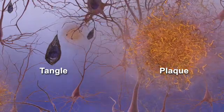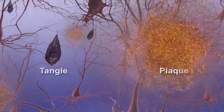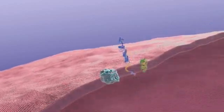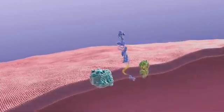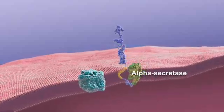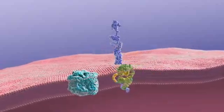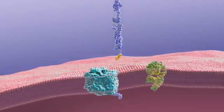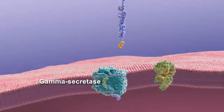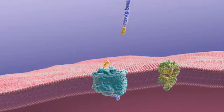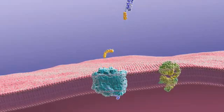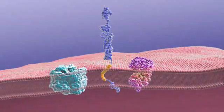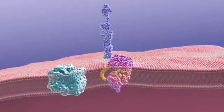Plaques form when specific proteins in the neuron's cell membrane are processed differently. Normally, an enzyme called alpha secretase snips amyloid precursor protein, or APP, releasing a fragment. A second enzyme, gamma secretase, also snips APP in another place. These released fragments are thought to benefit neurons.